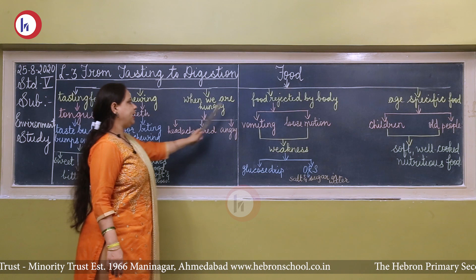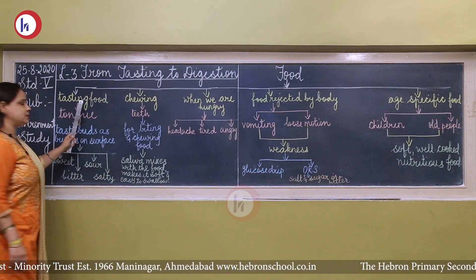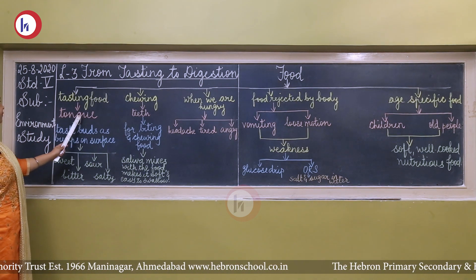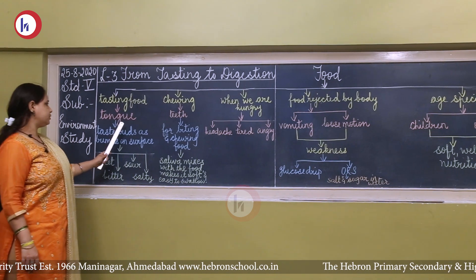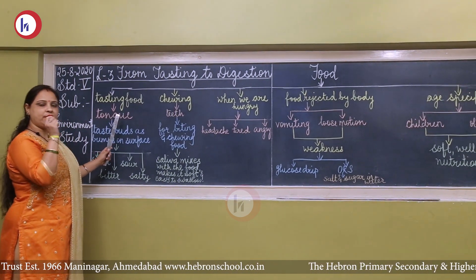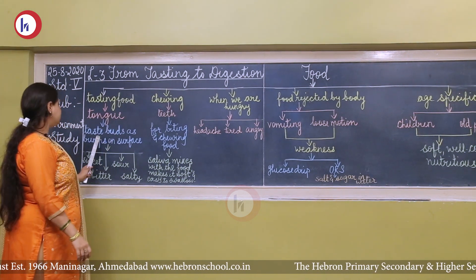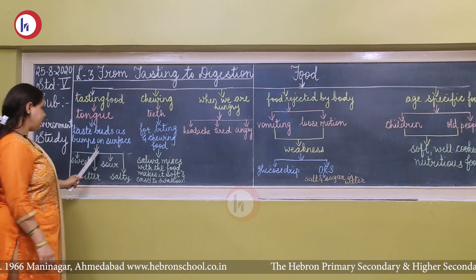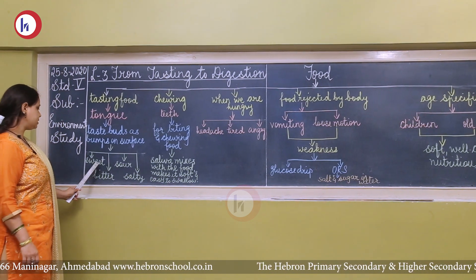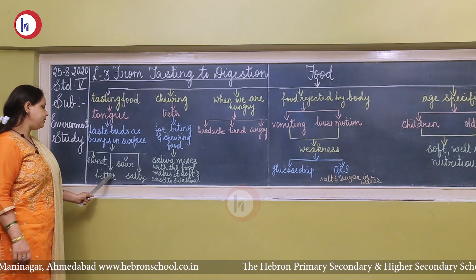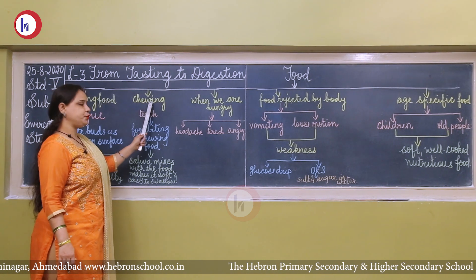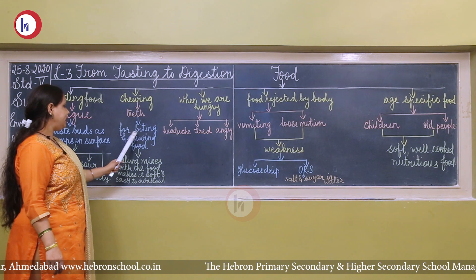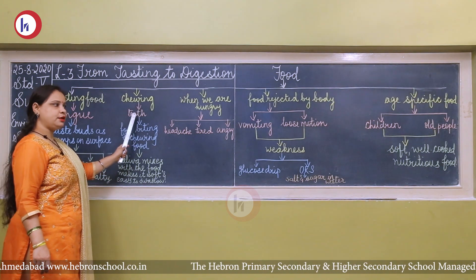Food can be divided into five categories. First is tasting: we taste food with the help of our tongue. On our tongue we have tiny small bumps called taste buds. With these taste buds we get different tastes — for example, sweet, sour, bitter, and salty. Next is chewing: we chew food with our teeth. For biting and chewing, teeth are very useful.